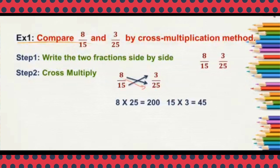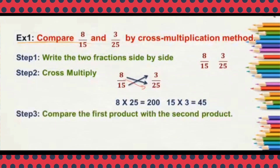In step 3, compare the first product with the second product. You have to compare between 200 and 45. Which is greater — 200 or 45? 200 is greater than 45.